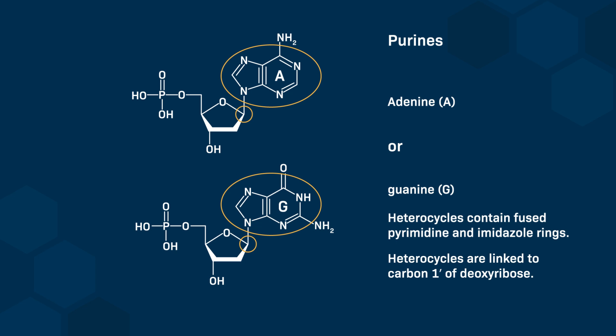A nucleoside is a nitrogenous base linked to its pentameric sugar, ribose or deoxyribose, whereas a nucleotide is a nucleoside with 1, 2, or 3 phosphate groups attached to the carbon-5' of deoxyribose or ribose.